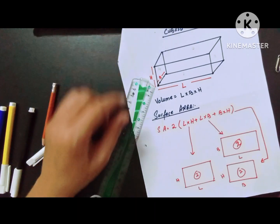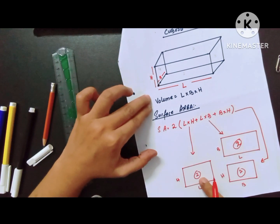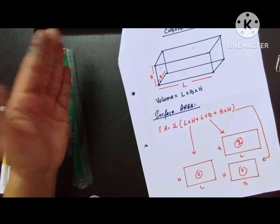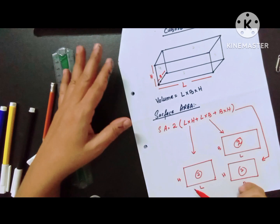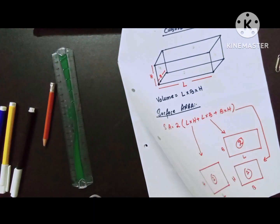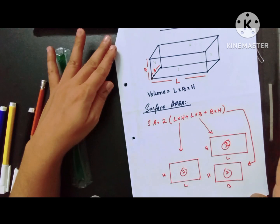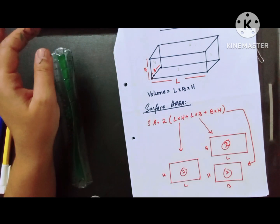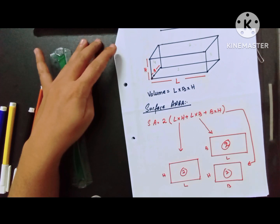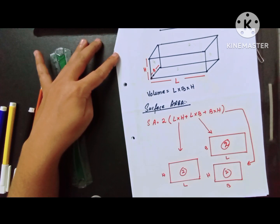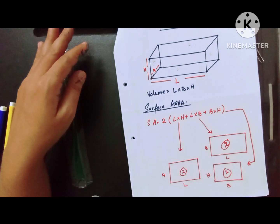So two times this, two times this, and two times this — total six surfaces. This completes the small discussion on cube and cuboid. We have questions in Exercise 14A which we will solve. If you have understood this discussion, subscribe to the channel. If not, write in the comments and I will explain. Further questions are very important.